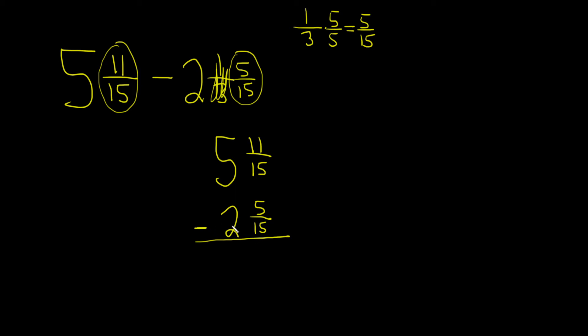So then what you do is you just subtract the fractional parts. So 11 minus 5 is 6, so you just get 6/15. And then you subtract the whole parts. So 5 minus 2 is 3. So we have a 3 here.